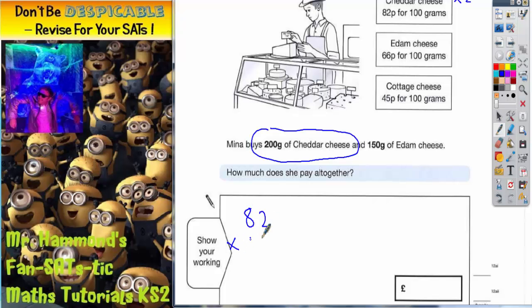Two twos are 4, two eights are 16 - put your 6 in, carry the 1. There's no other columns left, so that 1 can just go straight in. So that's 164 pence.